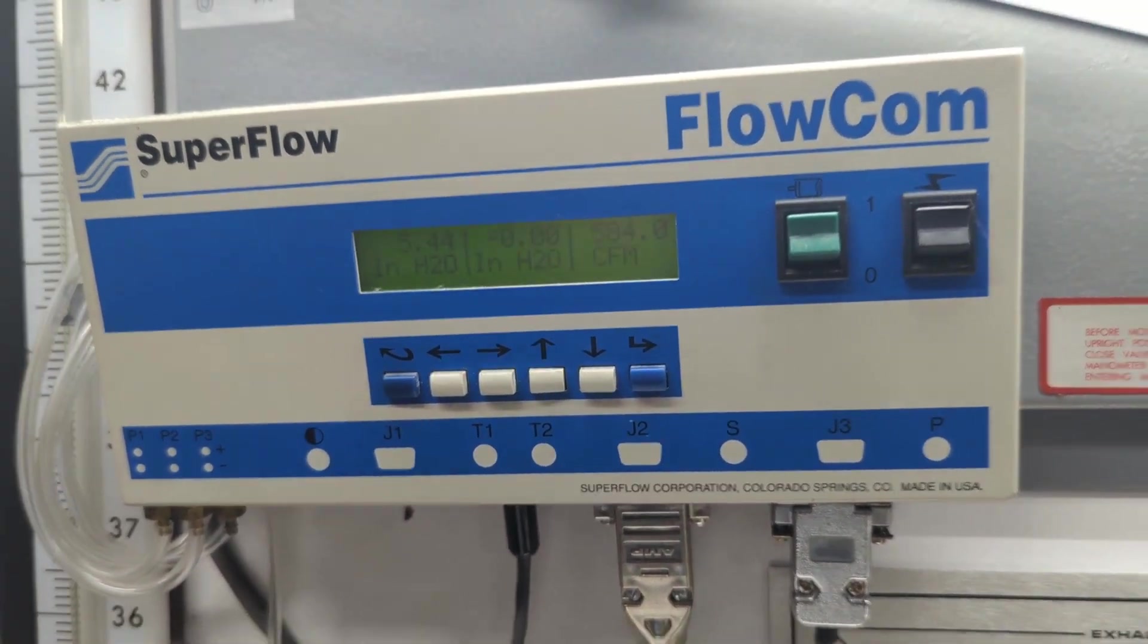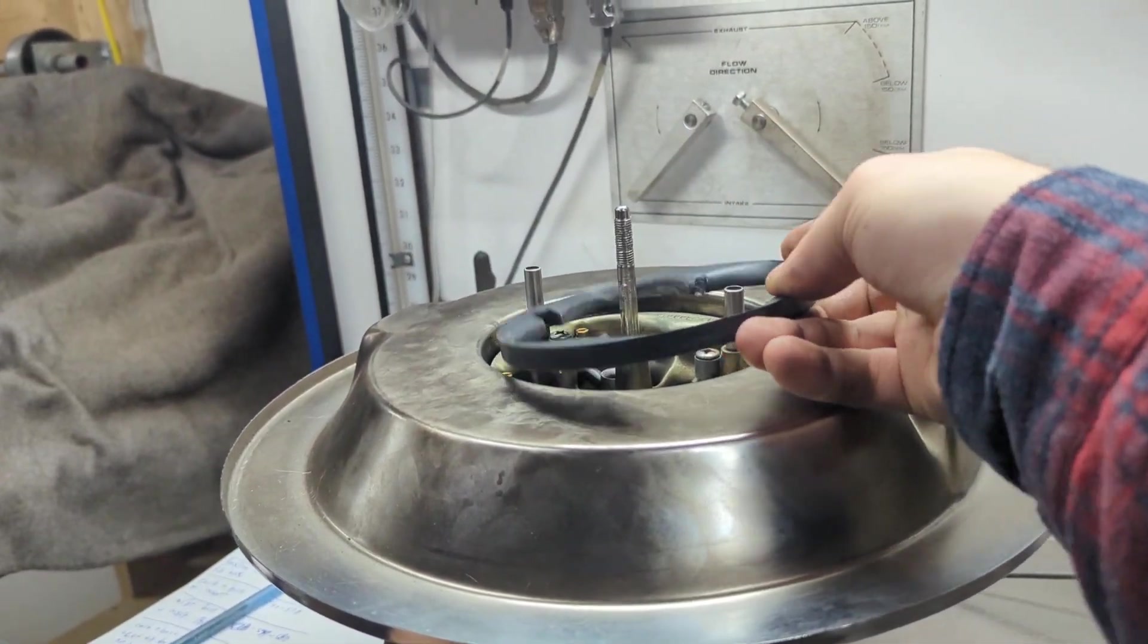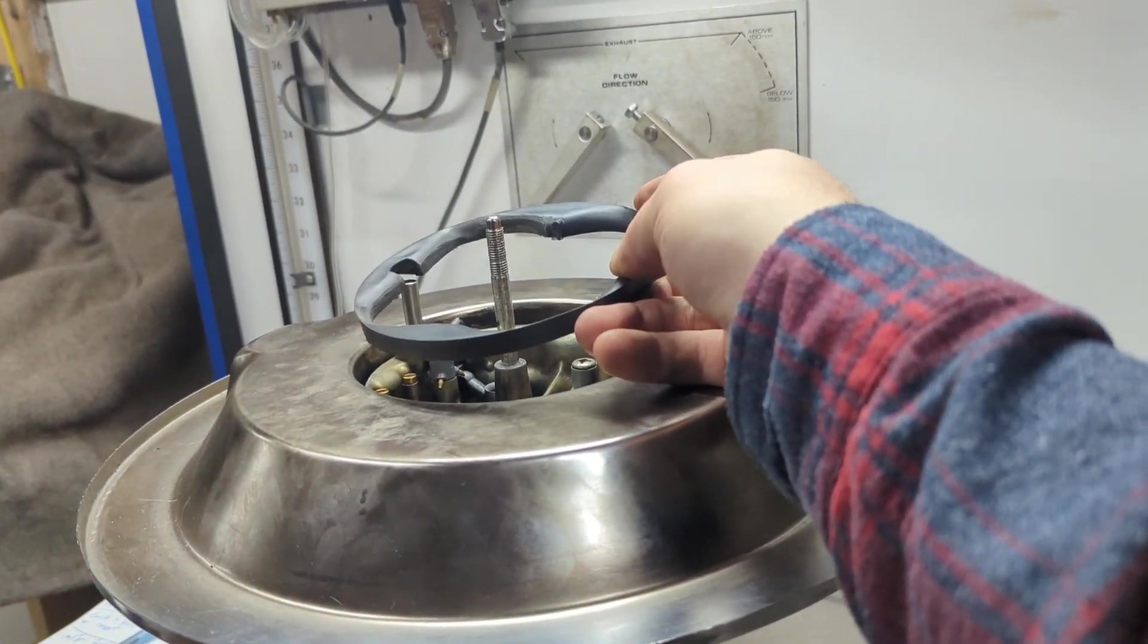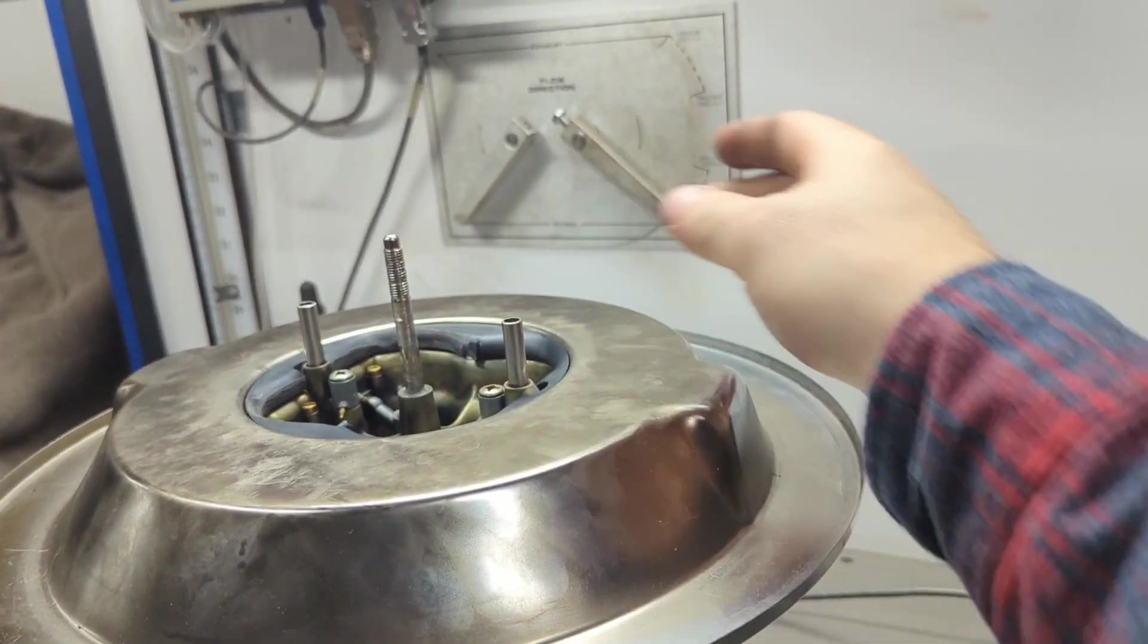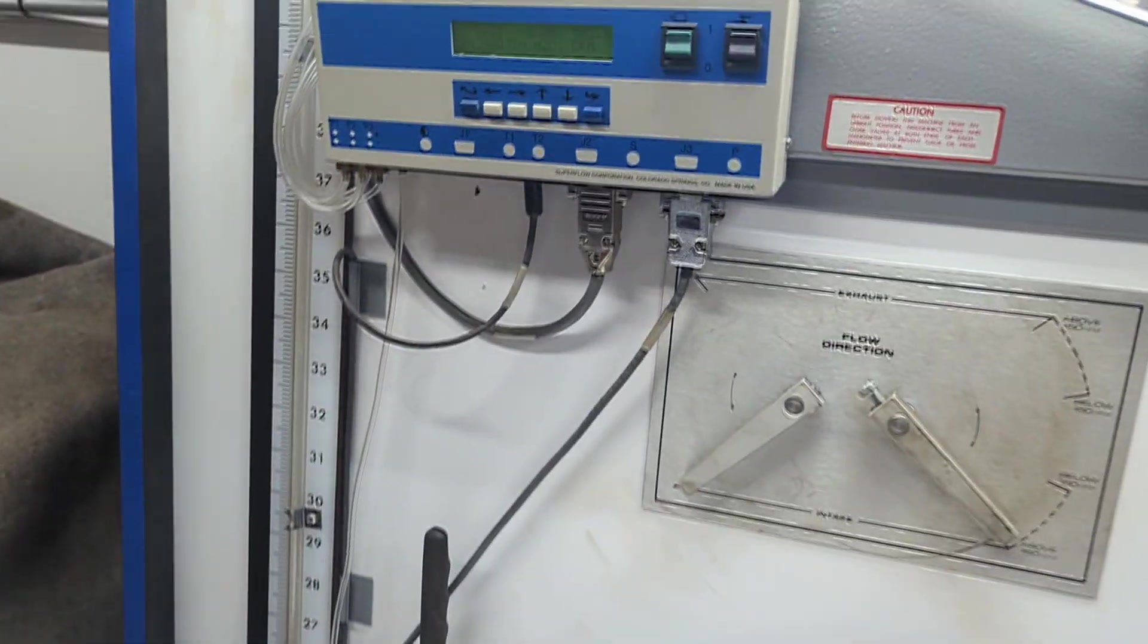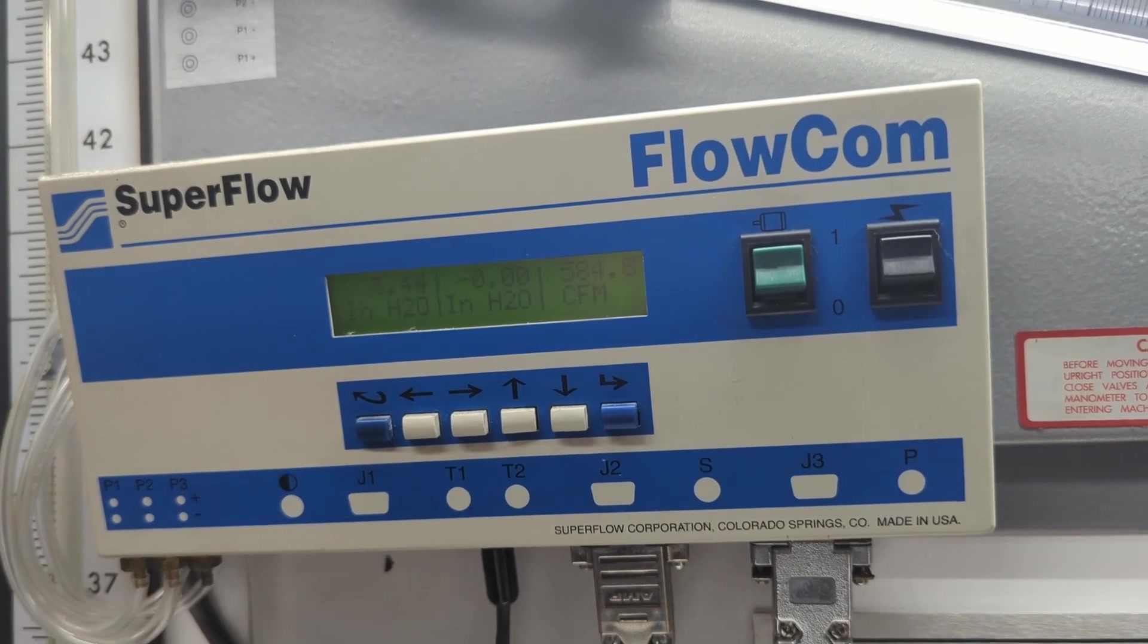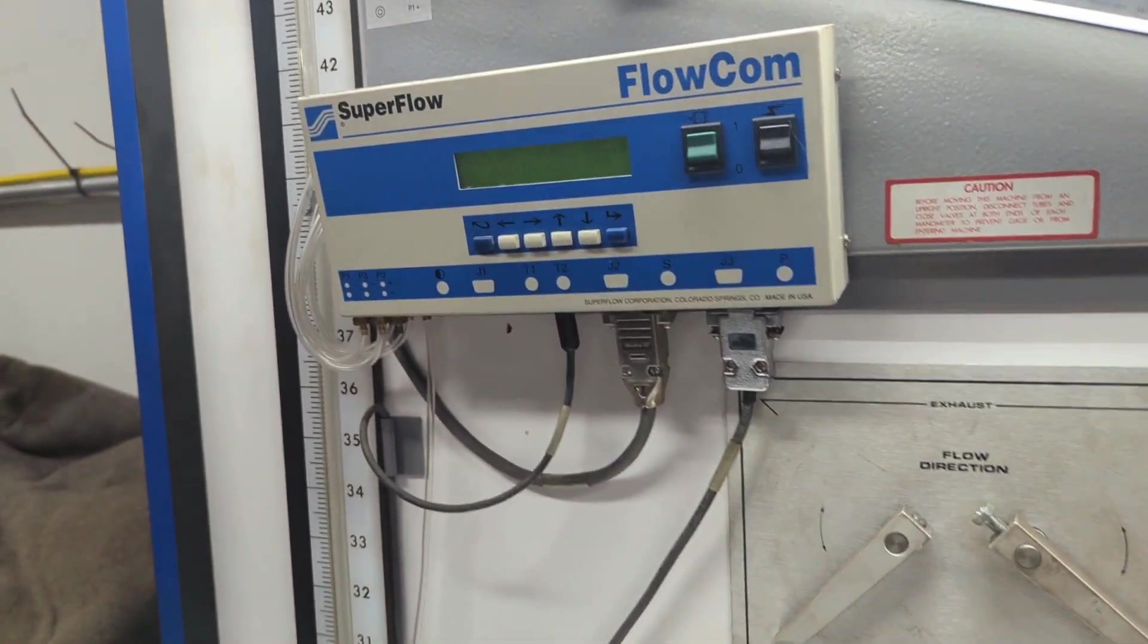We tried without and with and we looked at our flow numbers and realized that we were at the top end of what the bench could flow. We thought maybe we're just maxing out the bench and this is why we're getting these numbers that are the same. Cutting the crossbar out did pick up about 8 CFM.